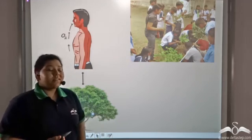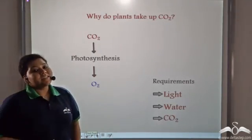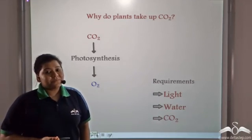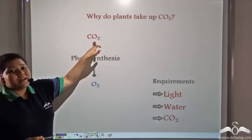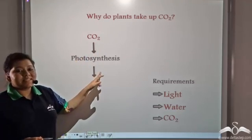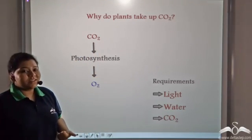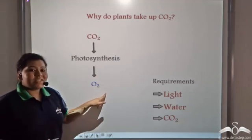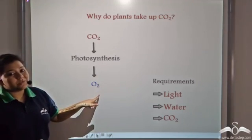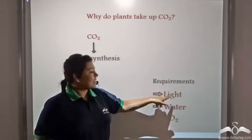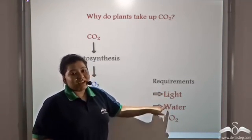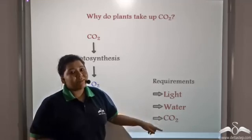Now, why is carbon dioxide taken up by the plants? Well, carbon dioxide is taken up by the plants for photosynthesis, that is food manufacture, and oxygen is given out as a byproduct. So the requirements for photosynthesis are light energy, water, and carbon dioxide.